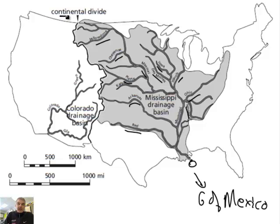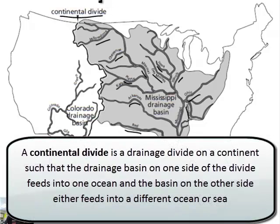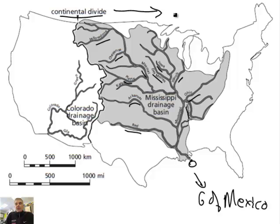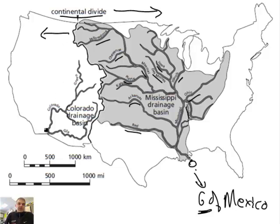Now, an interesting thing — we have something called the Continental Divide. If water falls on the right side, or the east side, of the Continental Divide, the water will eventually reach the Atlantic Ocean or the Gulf of Mexico. If it falls on the other side, the water flows essentially into the Pacific, down through the Colorado drainage basin, the Colorado River.